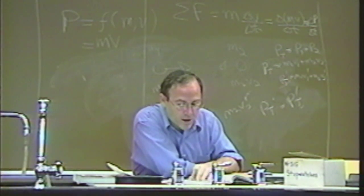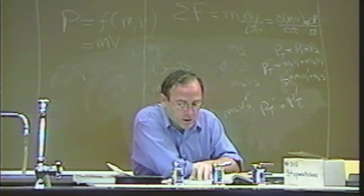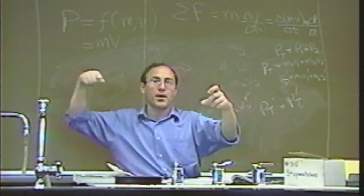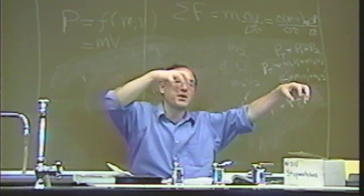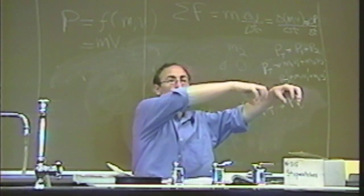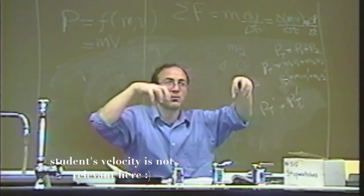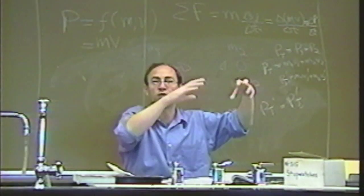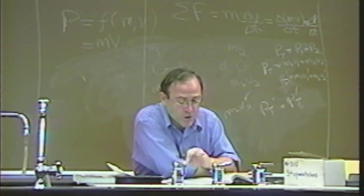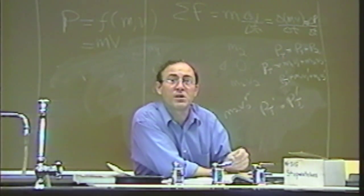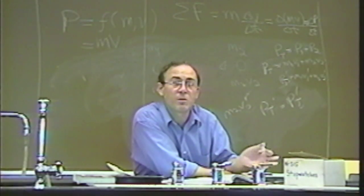A billiard ball of mass M moving with speed V flies head-on. What are the speeds of the two balls after the collision? In billiards, one ball is stationary and it's being hit by the other one. So one has an initial velocity of zero, and one has an initial velocity of V. We know that the initial speed is V — it doesn't matter what the number is, but it's known in the experiment.